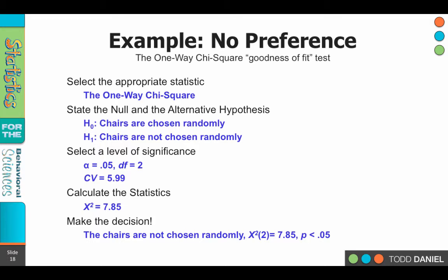So we will reject the null hypothesis that the chairs are chosen randomly, and instead embrace the alternative hypothesis, that the chairs are not chosen randomly. Our chi-square with two degrees of freedom equals 7.85, probability less than 0.05. And that is how we do a chi-square goodness of fit test for a situation of randomness or no preference.